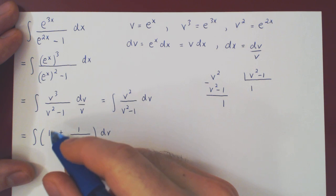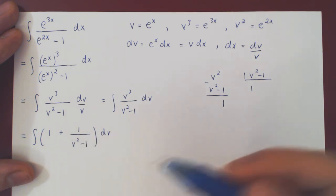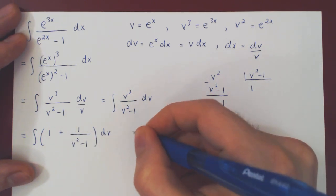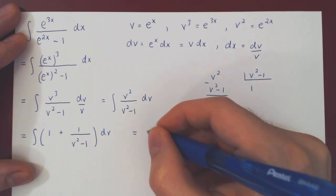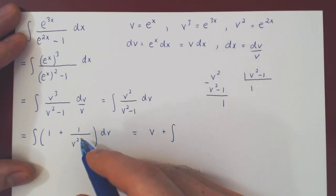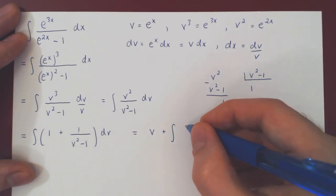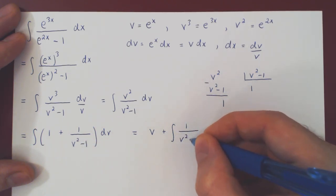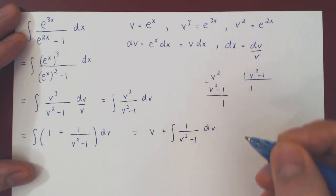Well, the integral of 1, of course, with respect to v is simply v. So we can break the two up. So we'll have v plus the integral of. Now how do we integrate 1 over v squared minus 1 with respect to v?